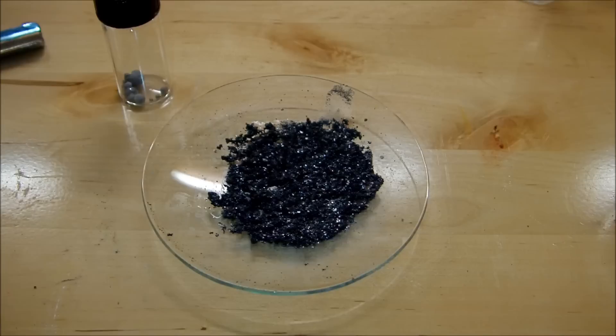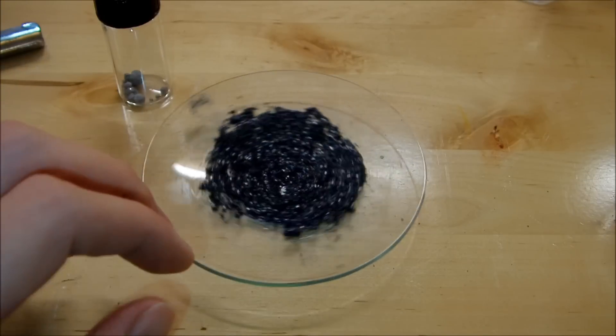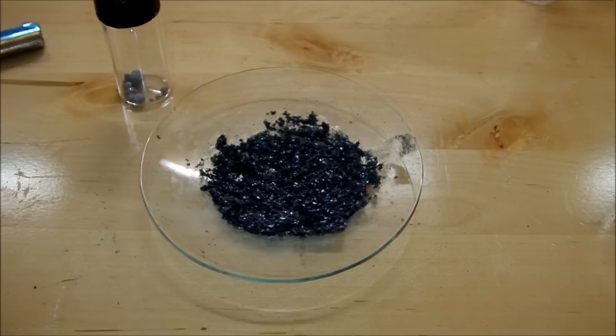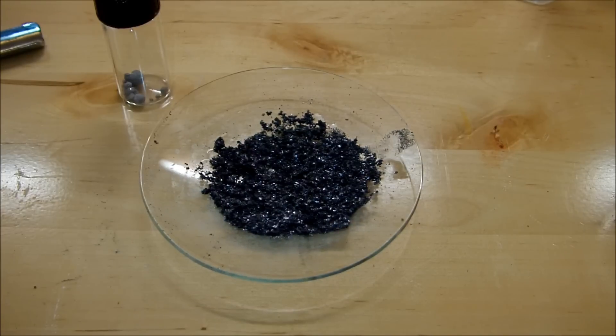So that was my original sample for my element collection. I think I'll switch over to this because it's quite a bit more appealing to look at. So that's how you get silicon metal out of sand. Hope you enjoyed and thanks for watching. I'll see you next time.